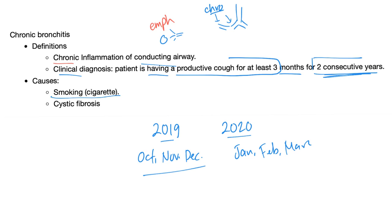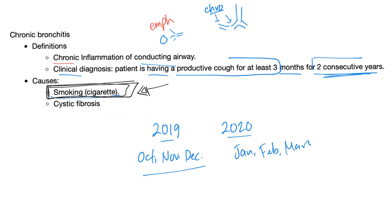Causes: smoking. The main villain is the cigarette — not cigars, e-cigarettes, or vaping. Those could be contributors, but when talking about chronic bronchitis scientifically, most cases are related to cigarette smoking. Also, cystic fibrosis can lead to chronic bronchitis.